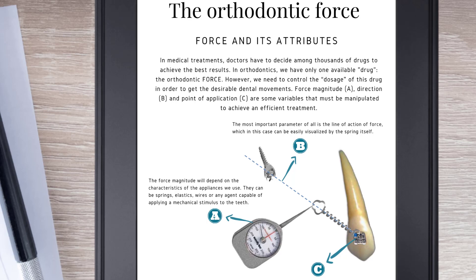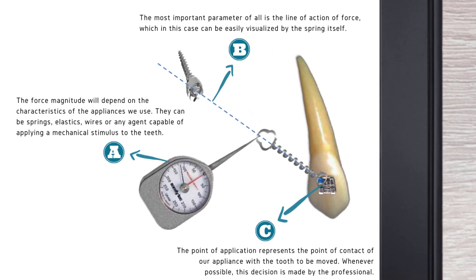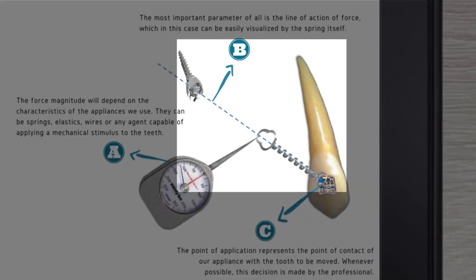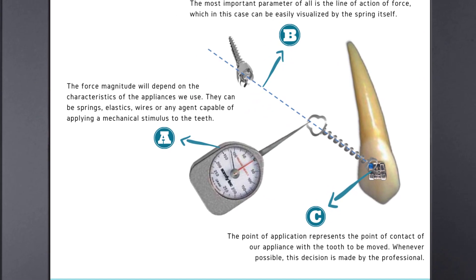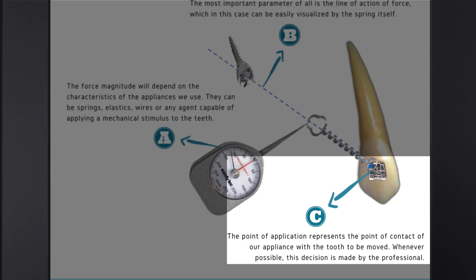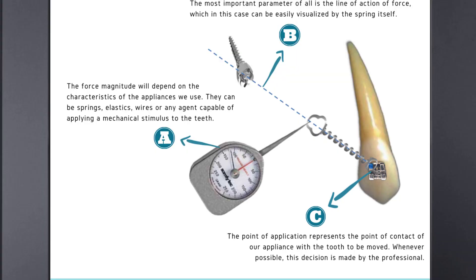The most important parameter of all is the line of action of force, which in this case can be easily visualized by the spring itself. The force magnitude will depend on the characteristics of the appliance we use. They can be springs, elastics, wires, or any agent capable of applying a mechanical stimulus to the teeth. The point of application represents the point of contact of our appliance with the tooth to be moved. Whenever possible, this decision is made by the professional.